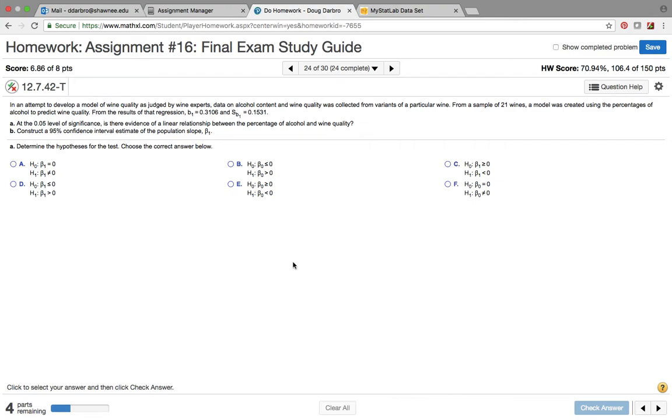Problem number 24. It looks like in this problem they are trying to examine the relationship between percent of alcohol and wine quality. So they're trying to predict wine quality from percent of alcohol, and you can see where they have the beta already calculated and the standard error for the beta already calculated.